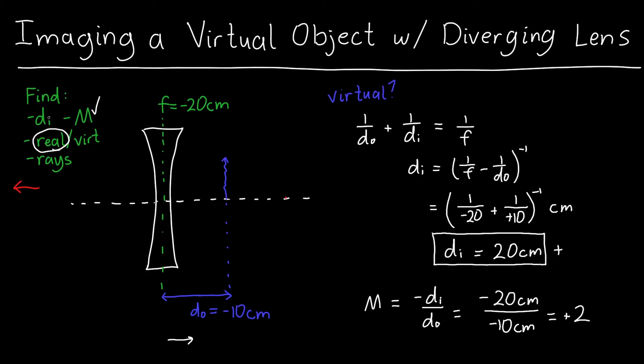The centimeters cancel, and I get an overall magnification of plus 2. So I have almost everything that I want so far. I have DI, I have magnification, I know that the image is real. Now, how do I do the ray tracing?